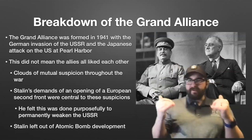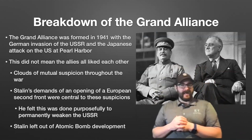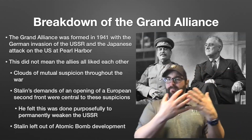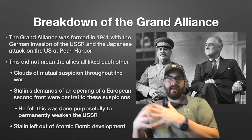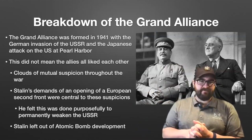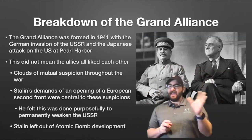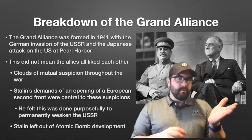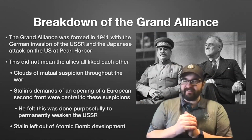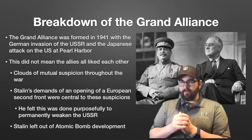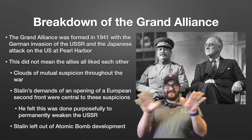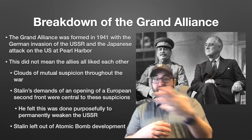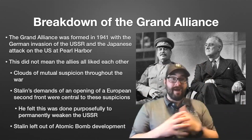We're going to start with talking about the breakdown of the Grand Alliance. Remember that the Grand Alliance was the alliance formed between Britain, the United States, and the Soviet Union in 1941, as Germany invaded the Soviet Union in June of 1941, and Japan attacked the United States in December of 1941. But this didn't mean the Allies all liked each other — there were always clouds of suspicion throughout the war.